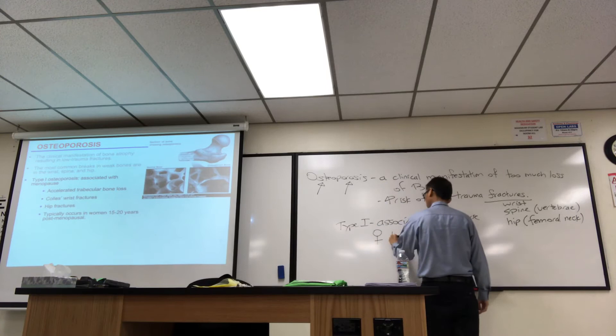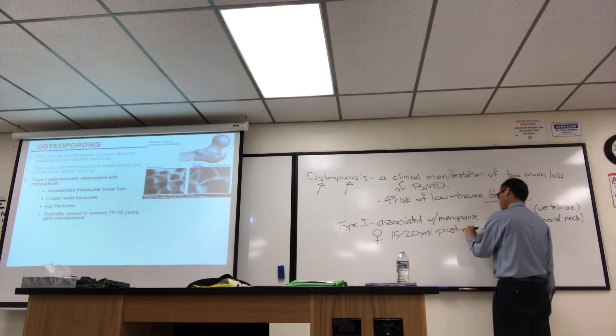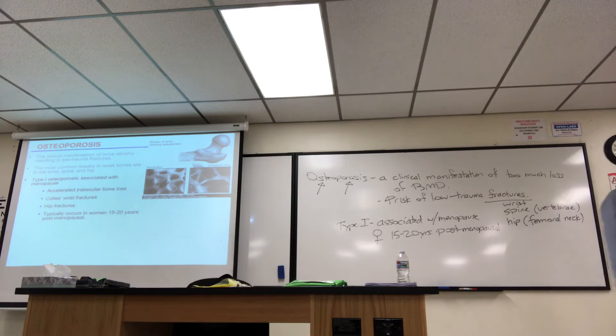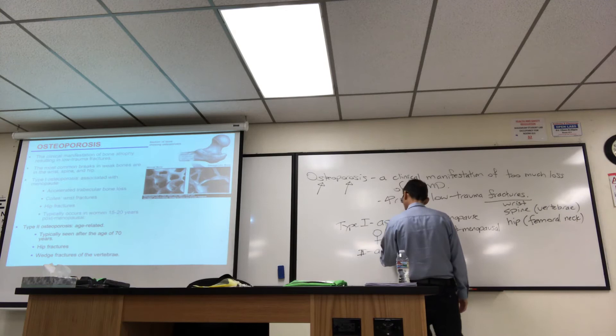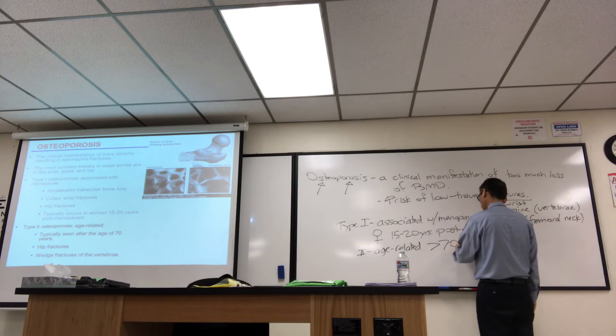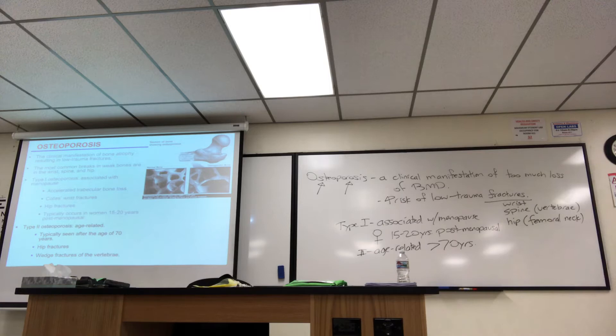In females, the sign for female, 15 to 20 years post-menopausal. So type 2 is just, we just say age-related. It could be a man or a woman. Typically seen after the age of 70 years. So I'll just put 2, age-related, so basically more than 70 years. I'll just throw that in there. Type 1, type 2, we typically see it in the elderly.